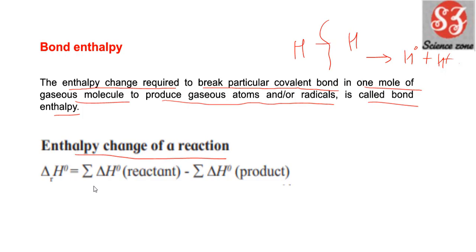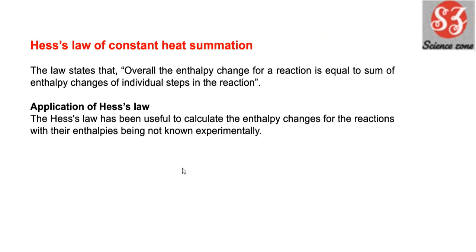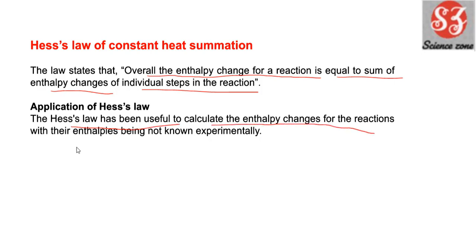Next है Hess's law of constant heat summation। Hess's law कहता है कि overall enthalpy change of any reaction वो equal होता है to the sum of enthalpy changes in the individual steps of the reaction। Suppose कोई reaction four steps में हो रहा है तो हर एक step के enthalpy changes का sum होगा overall enthalpy change। Hess's law बहुत useful है calculate करने के लिए enthalpy change for reactions whose enthalpies are not known experimentally।